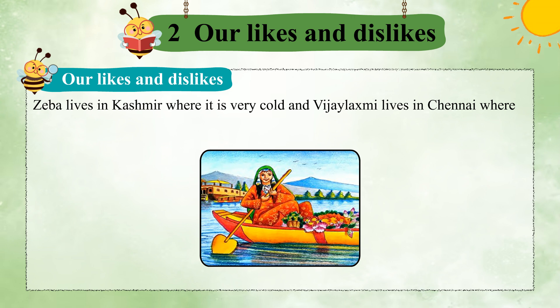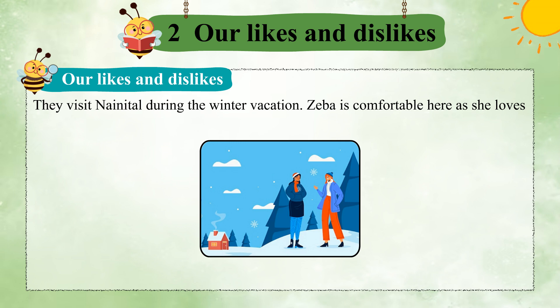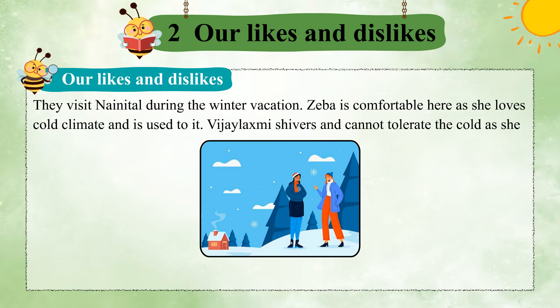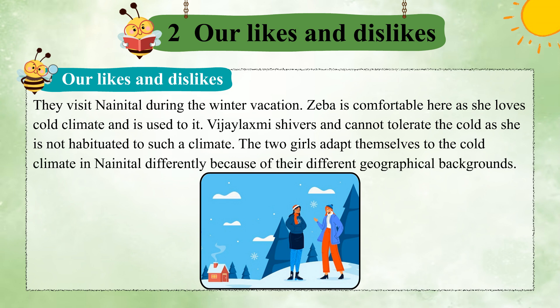Jepa lives in Kashmir where it is very cold, and Vijayalakshmi lives in Chennai where the climate is humid and warm. They visit Nainital during the winter vacation. Jepa is comfortable here as she loves cold climate and is used to it. Vijayalakshmi shivers and cannot tolerate the cold as she is not habituated to such a climate. The two girls adapt themselves to the cold climate in Nainital differently because of their different geographical backgrounds.